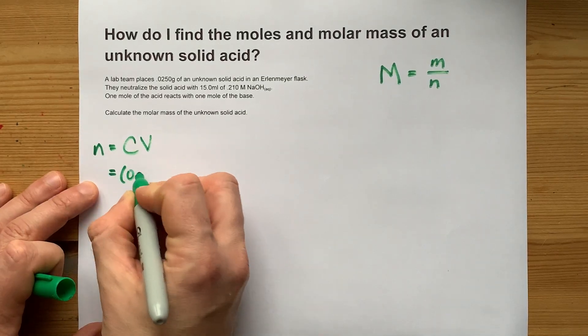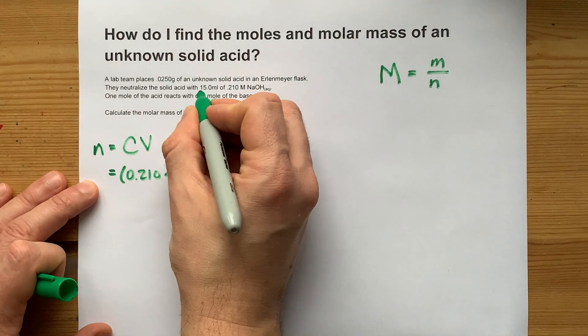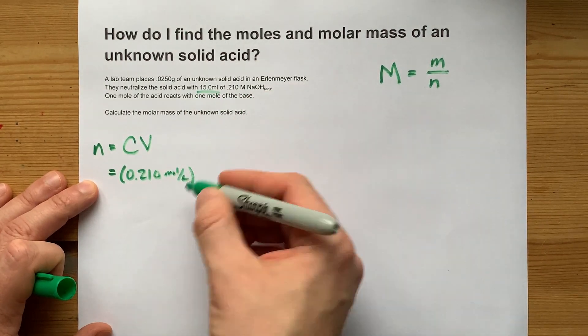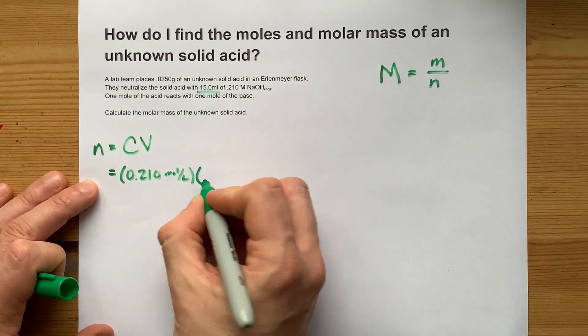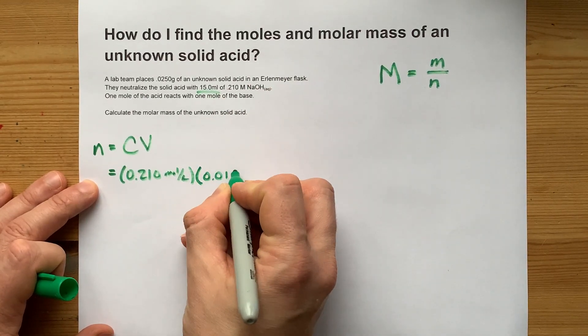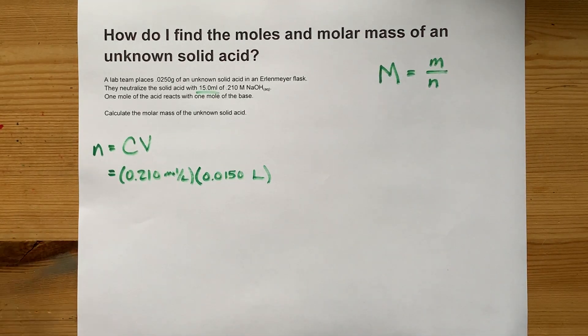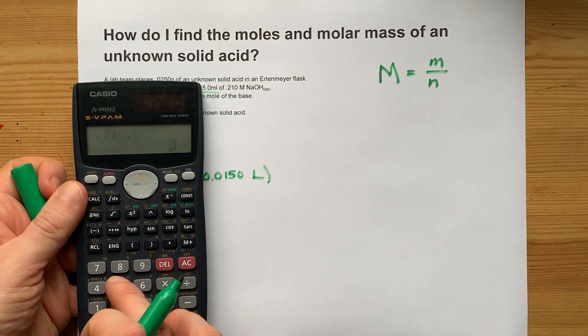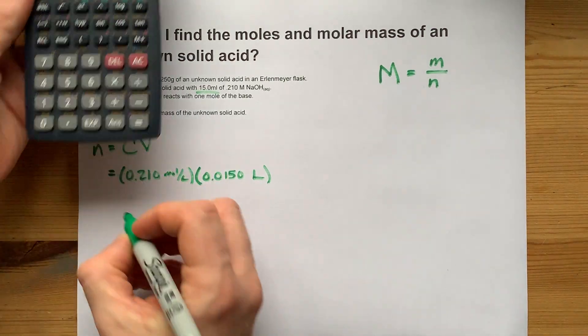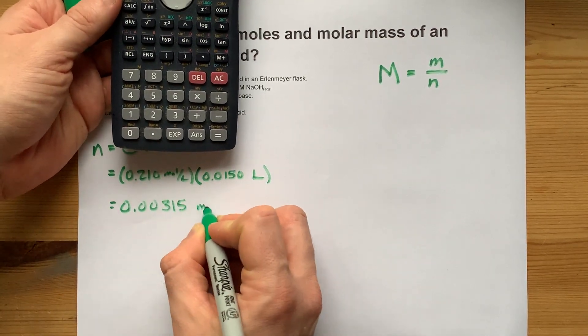The concentration was 0.21 moles per liter, and this needs to be in liters if you're going to multiply it by a unit that is per liter. 15 milliliters is 0.015 liters. Multiplying those two together gives you 0.21 times 0.015, which equals 0.00315 moles.